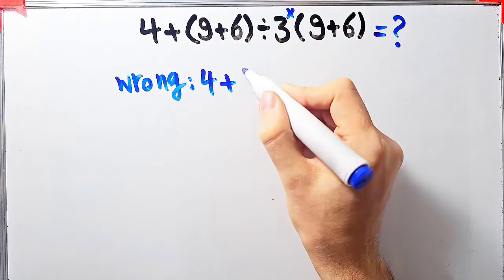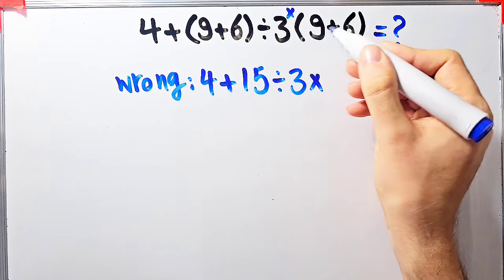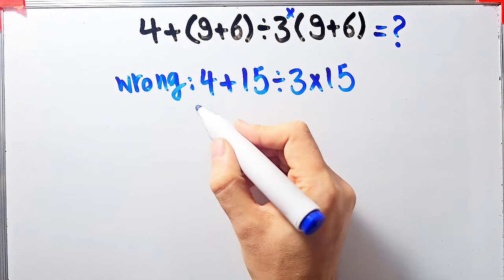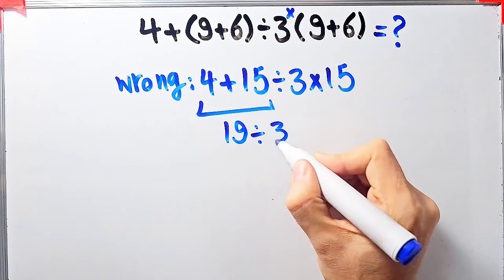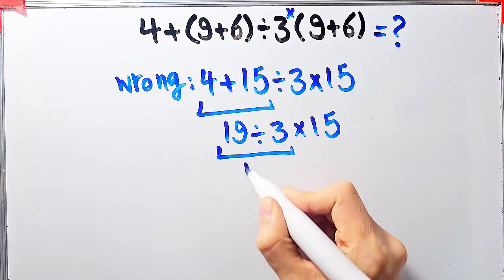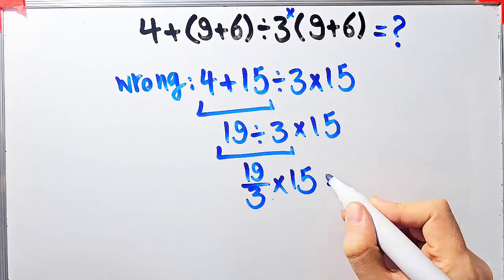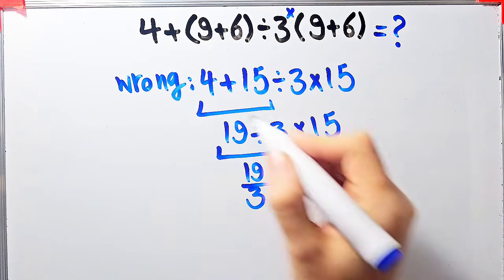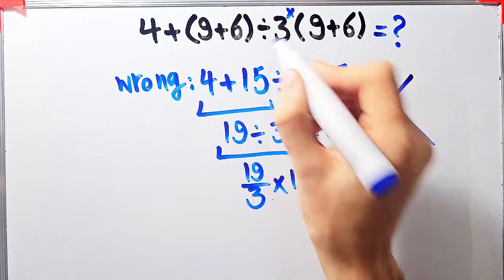Some people solve this question incorrectly. They say four plus nine plus six equals fifteen, divided by three, times nine plus six equals fifteen again. Starting from the left: four plus fifteen equals nineteen, nineteen divided by three equals nineteen over three, times fifteen equals ninety-five. They say the final answer equals ninety-five, but this answer is definitely wrong.